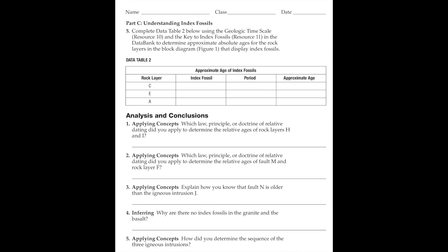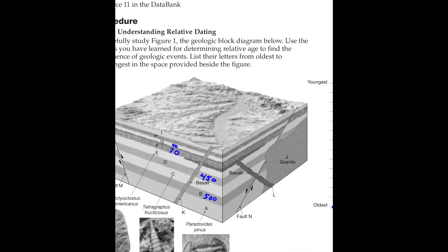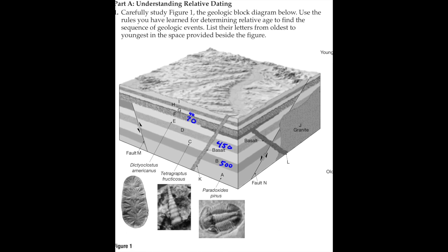Next we're going to utilize index fossils. Remember, an index fossil is a fossil that lived through a short period of geological time before going extinct or evolving. So if we find them, we can know how old the layer is. The activity is asking for the approximate age of the index fossils and the period. Rock layer C — looking at the index fossil chart, we have Tetragraptus fructicosus there. They used the wrong picture — it's actually a graptolite, but they put a picture of a snail shell. Somebody goofed up.